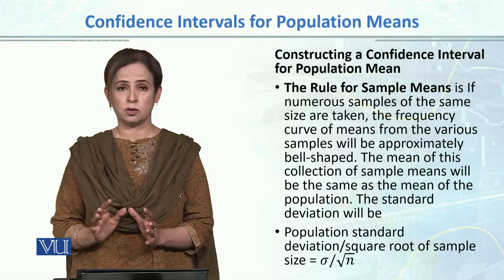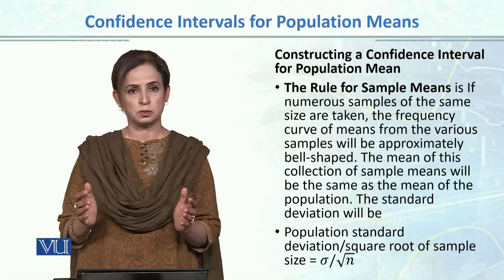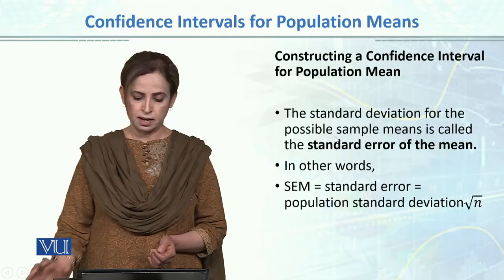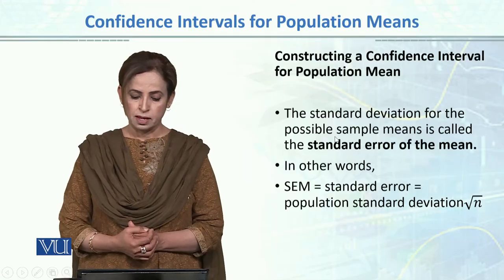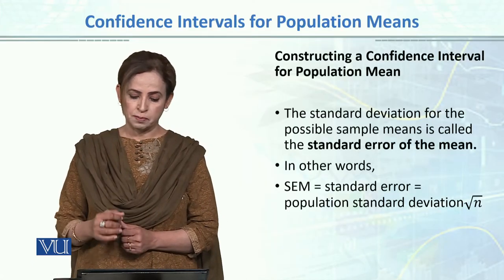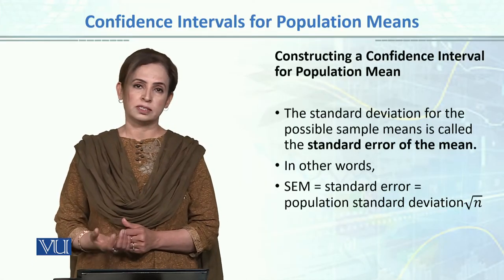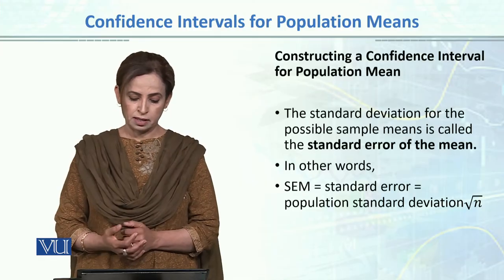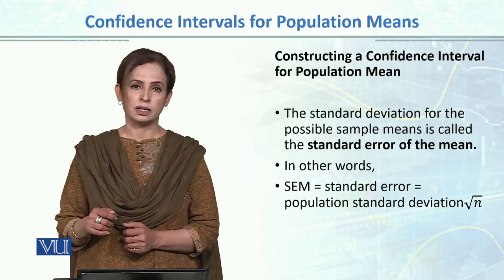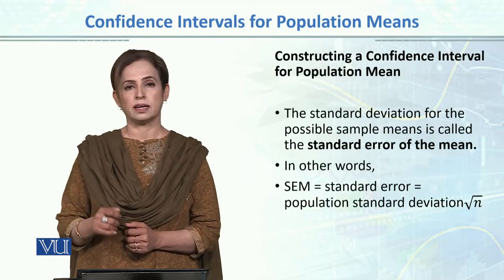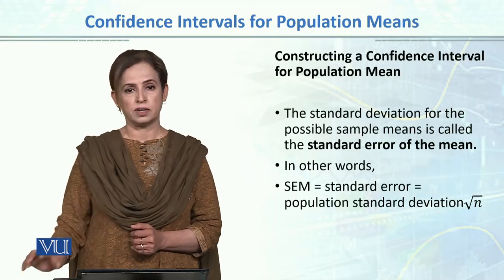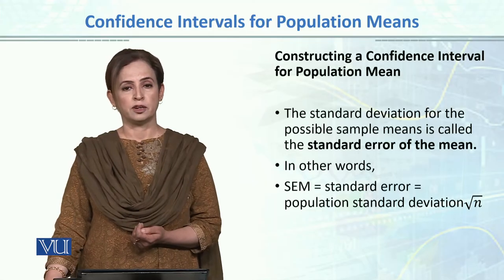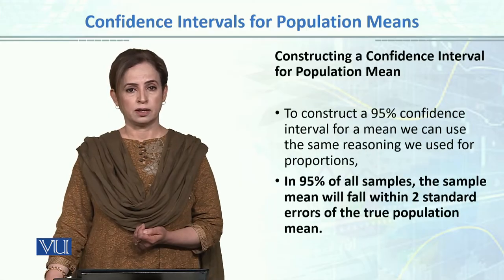The standard deviation is equal to sigma over square root of n. The standard error, or standard deviation of the sampling distribution of means, would be equal to sigma over square root of n. The standard deviation for the possible sample means is called the standard error. So the standard error is equal to the population sigma divided by square root of n.